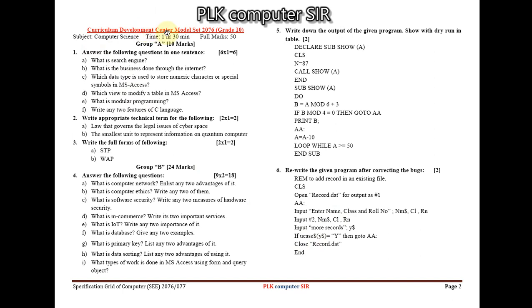This is the model question issued by the Curriculum Development Center (CDC), model set 2076, to be implemented from 2077 BS. Subject: Computer Science, time: 1 hour 30 minutes, full marks: 50. For Group A very short questions: examples include 'What is a search engine?', 'What is the business done through the internet?', 'Law that governs legal issues of cyberspace', and 'Smallest unit to represent information on a quantum computer.' Full forms include HTTP and WAP — all from Computer Fundamentals.